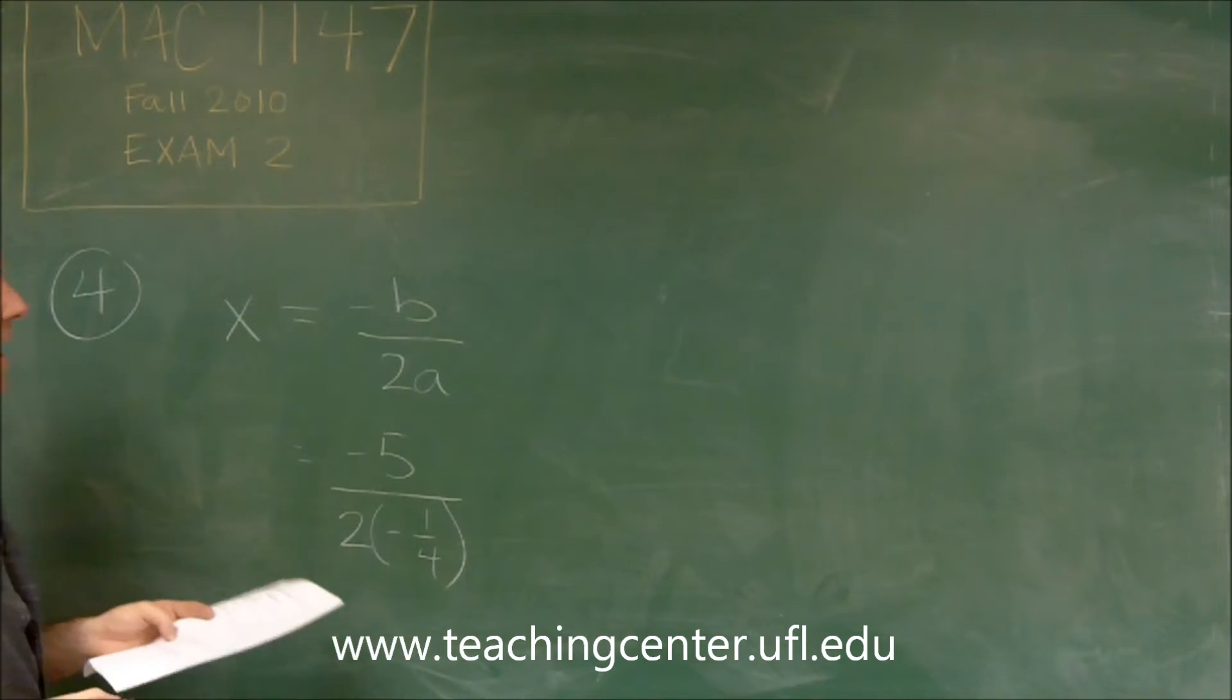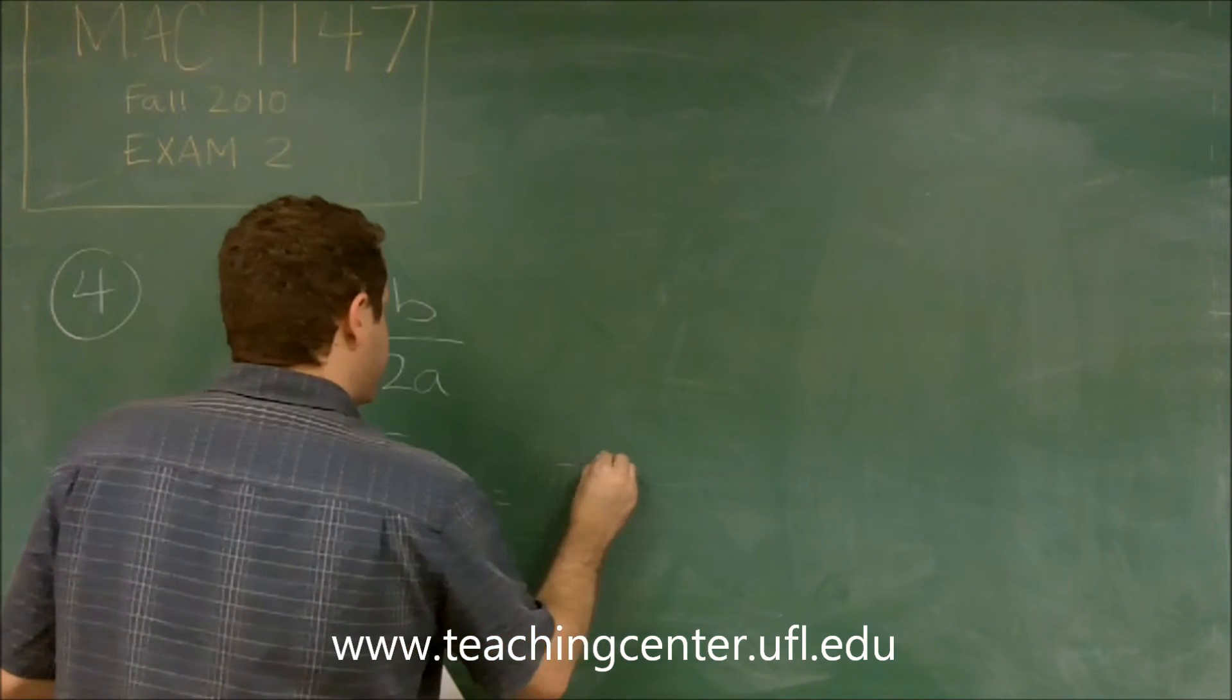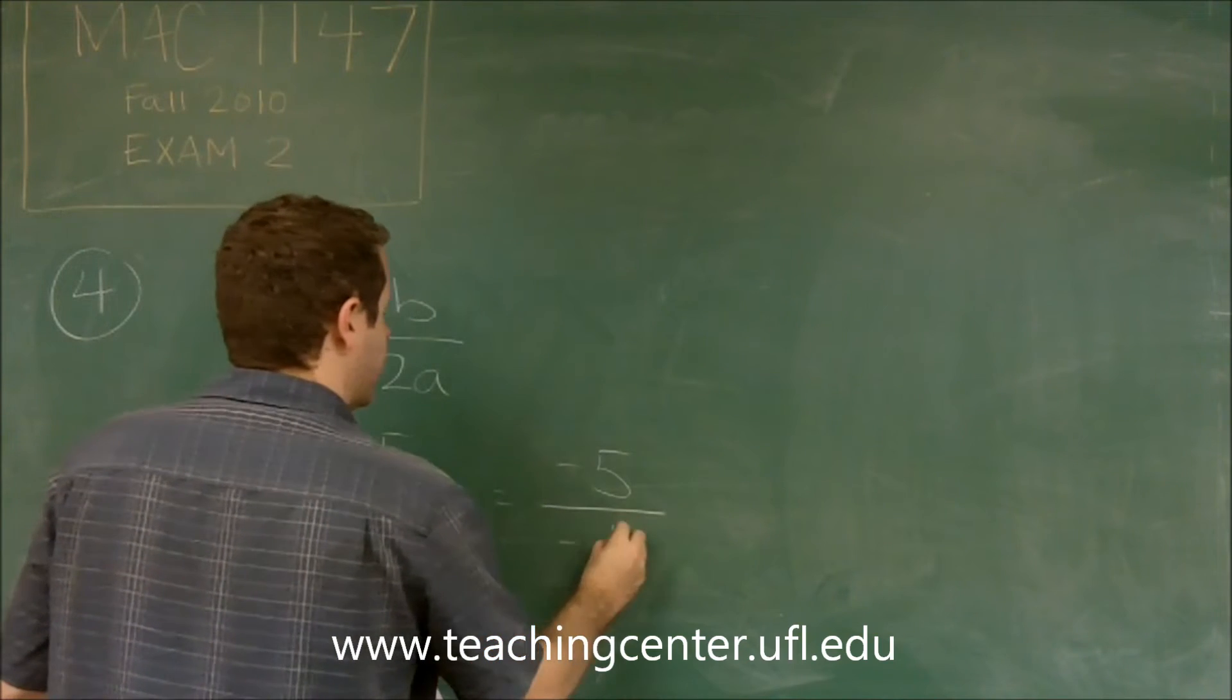So we just need to evaluate this, and that will give us our axis of symmetry. This is negative 5. On the bottom, 2 times negative 1 fourth would give us negative 1 half.